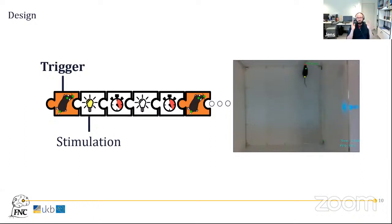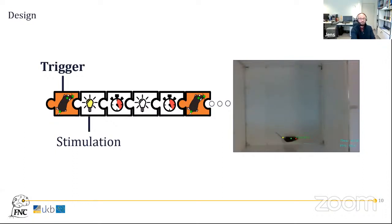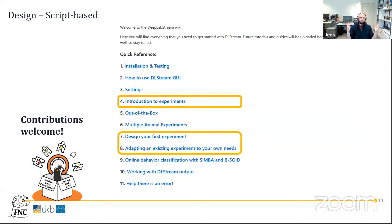Behavior is a broad term, so what is a behavior-dependent trigger? If you are looking at pose estimation data you have a time series — the position over time — and this gives you many opportunities to detect behavior of interest. For example, you can look at the heading direction of an animal and define that as a behavior of interest, or look at speed: whenever the animal is running above a certain threshold, you could stimulate it with blue light, show it a specific image, play a tone, or give it a reward.